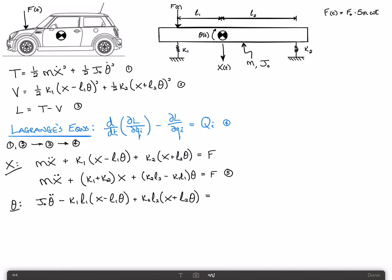Okay, plus K2 L2 times X plus L2 theta. And that is equal to the moment produced by this force. The moment is in the negative theta direction, so it should have a negative sign. Negative F times the moment arm, which is L1.